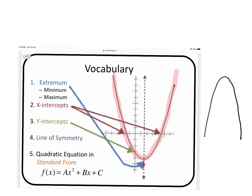A line of symmetry cuts the parabola directly in half, right down the middle. For this parabola it would be like this — it goes through either the lowest point or the highest point. And this is the standard form that we are looking at for graphing these parabolas.